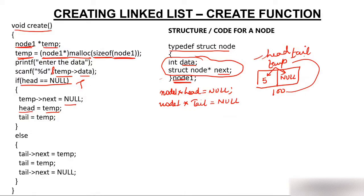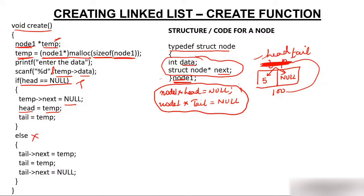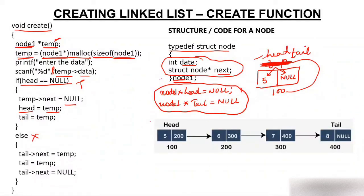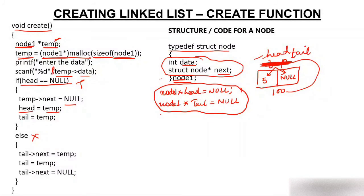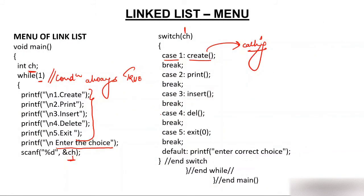We don't go to the else part. The moment we come out of the create function, the temp variable gets destroyed because temp is a local variable — the life of a local variable remains only while control is inside the block. Head and tail do not die because they are declared above the main function, so they remain for the entire program execution. We go back to the menu.